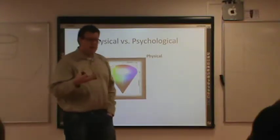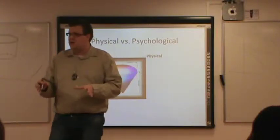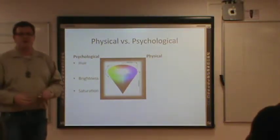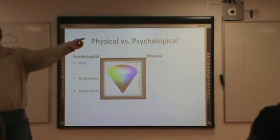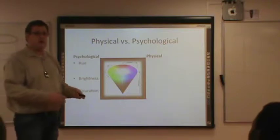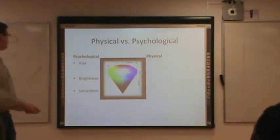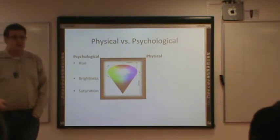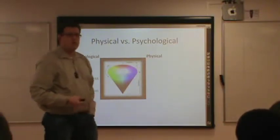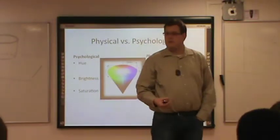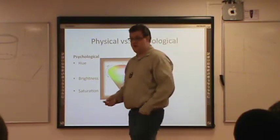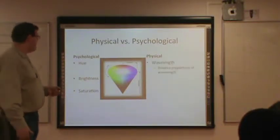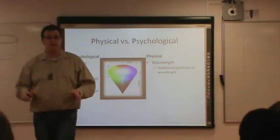We can talk about the physical stimulus — the electromagnetic radiation, the different wavelengths or frequencies and energy. But when people talk about colors, they don't say 'that's a pretty low wavelength color.' They say 'that's a pretty green' or 'a bright orange.' So when talking about psychological properties of color, we refer to hue, brightness, and saturation. Hue is related to the wavelength — or the relative proportions of wavelengths available.